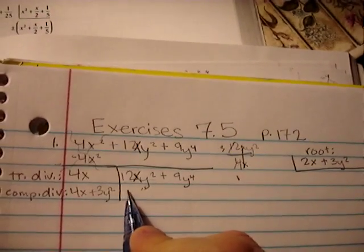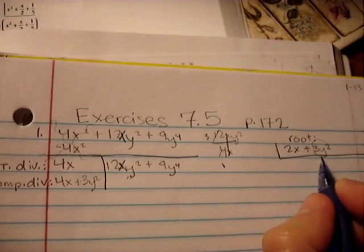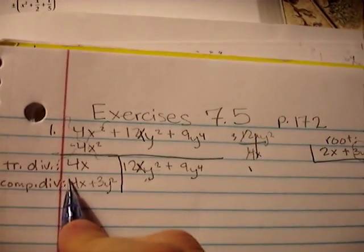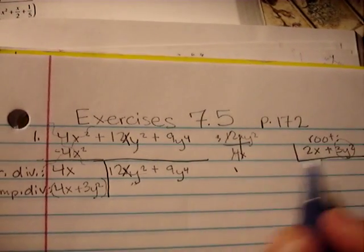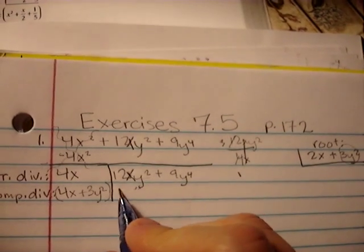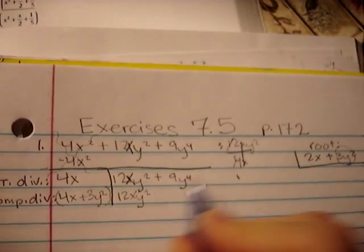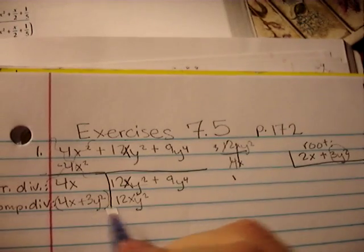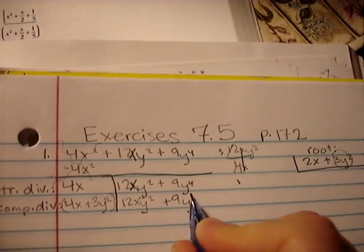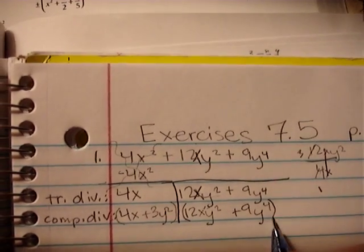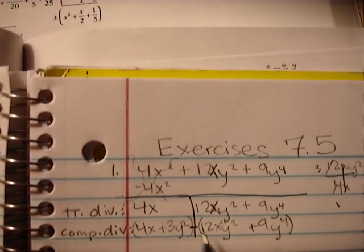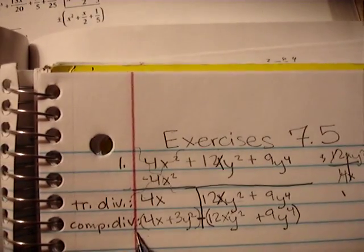And then, this part right here, I take my latest term I found, and I multiply it by everything in the trial divisor. So 3y squared times 4x is 12xy squared. 3y squared times 3y squared is 9y to the 4th. So you see, I get the very same thing, and that's good because what I want to do for these problems is I'm just checking my work to make sure that if I minus, that these will all cancel out, and yes, of course they do.